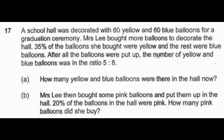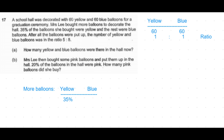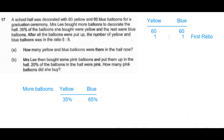For the first part, we start with yellow balloons and blue balloons each with 60, which means they are currently in the ratio 1:1. After Mrs Lee buys more balloons, it's given that 35% of the balloons she bought were yellow, which means the remaining 65% were blue. 35:65 simplifies to the ratio 7:13, since 35 divided by 5 is 7 and 65 divided by 5 is 13.